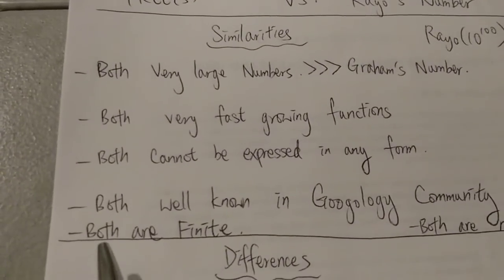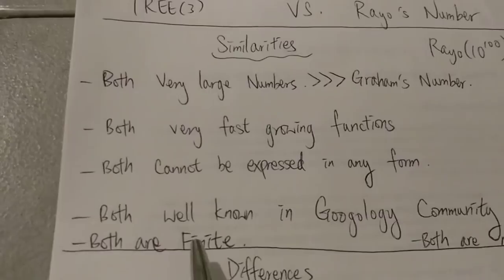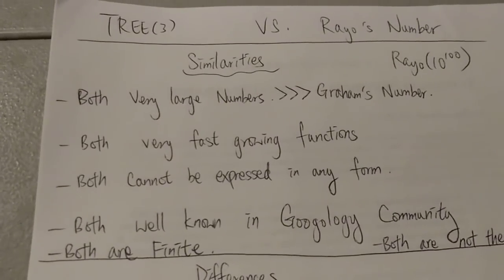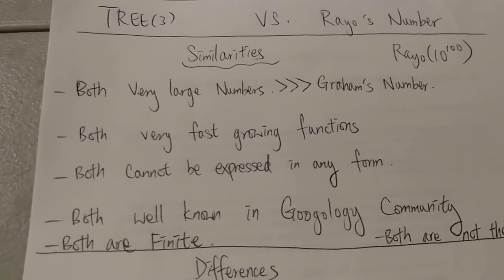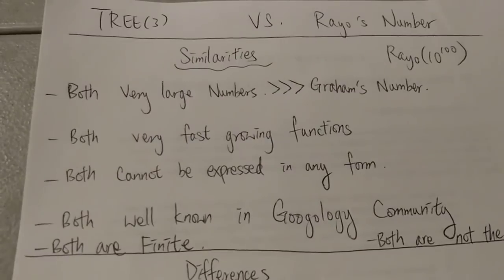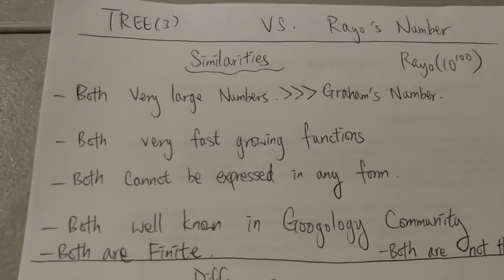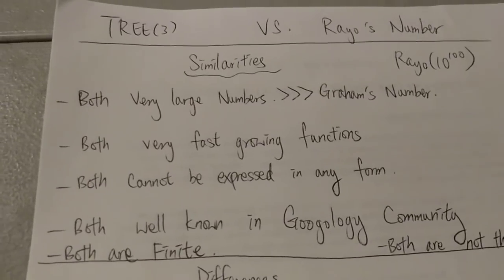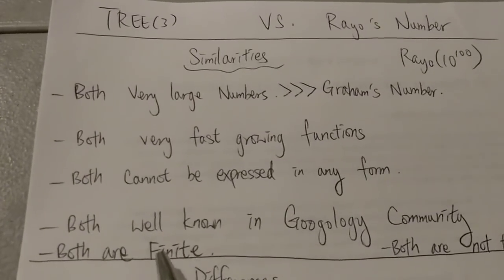And of course, both are finite. So even though they are very, very big and cannot be expressed in any form, they are actually finite. Especially Rayo's number—some people say, oh, is that an infinite number? No. Even Rayo's number is not infinite. It's finite.